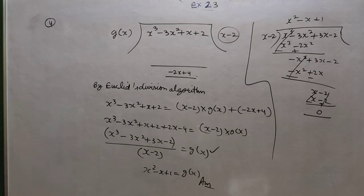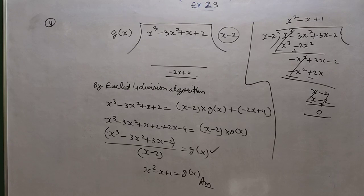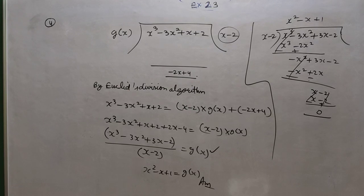The conditions are: degree of p(x) equals degree of q(x), and degree of q(x) equals degree of r(x). You have to give suitable examples which satisfy the division algorithm — meaning the division algorithm should be satisfied. I am giving you some examples so that you can understand.